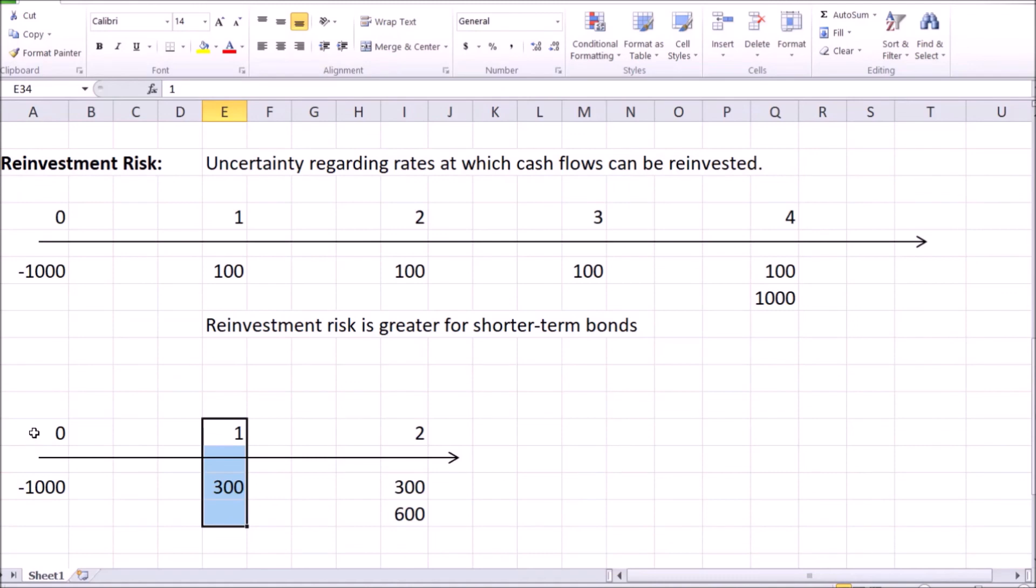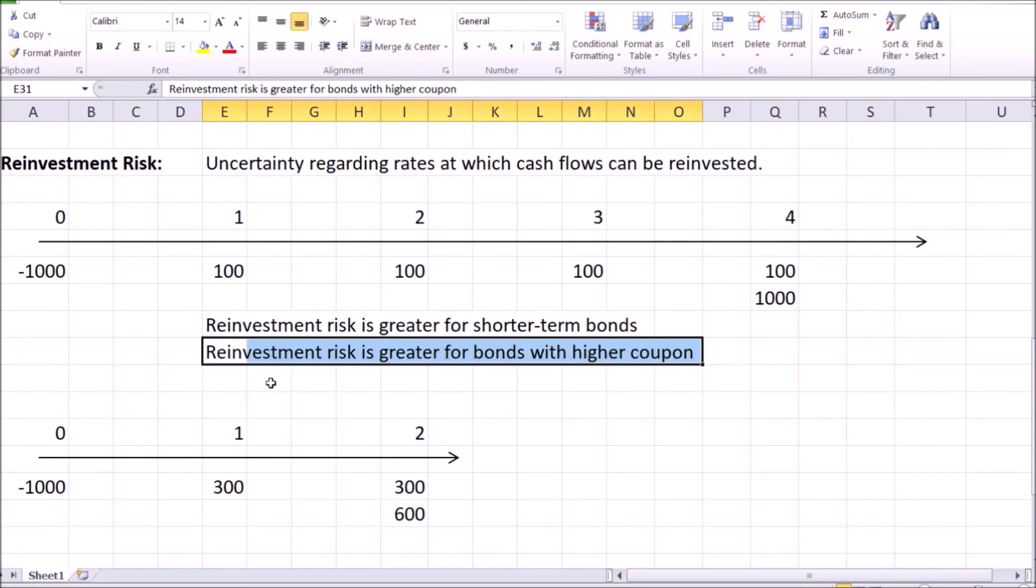after one year, I'm going to receive a coupon of $300 instead of a coupon payment of only $100. Hence, my worries, my concerns about being able to reinvest these future cash flows at an attractive interest rate are a little bit greater. So reinvestment risk is greater for bonds with higher coupon payments.